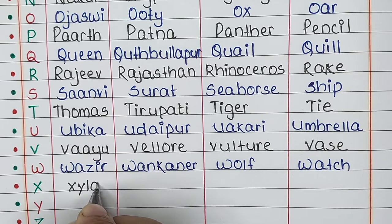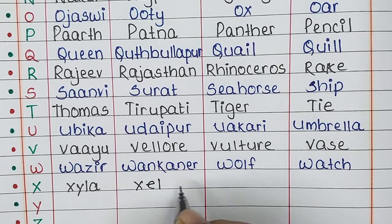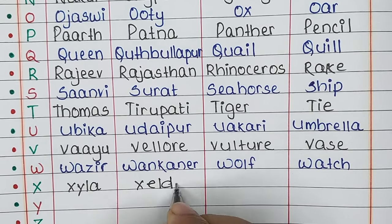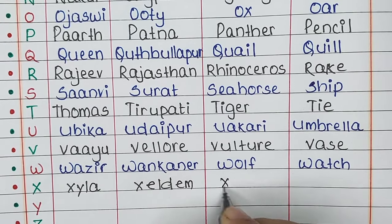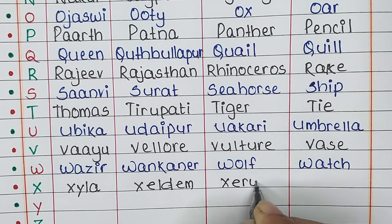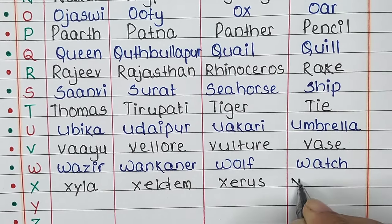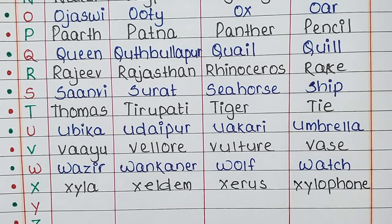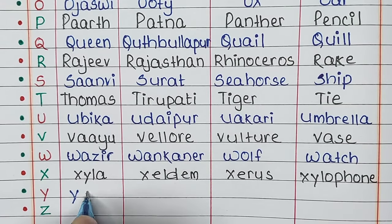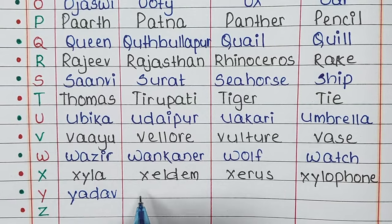Next is letter X. The name is Xyla, the place is Xeldam, the animal is Xerus, and the thing is Xylophone.